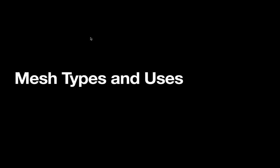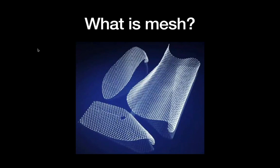Today's video is on the big picture of different types of mesh and their uses. Before talking about the different types, we should discuss what a mesh is, what it's used for, and what properties we might want. At its most fundamental level, mesh is a material used to buttress weak points in the human body. In general surgery, the most common use is to repair hernias, which are a weakness in the fascia — most commonly the abdominal fascia.